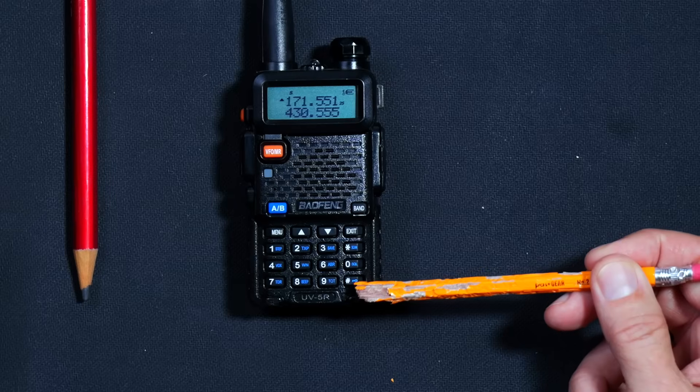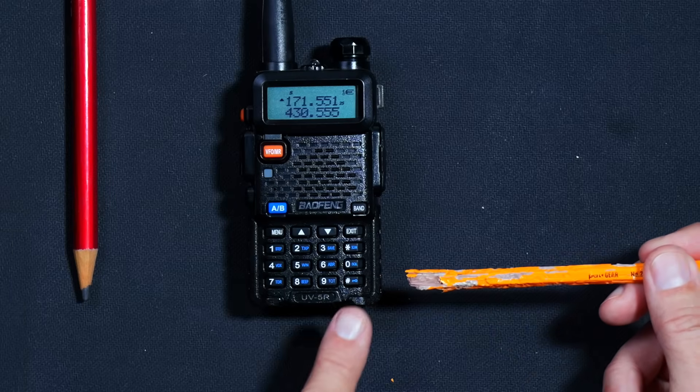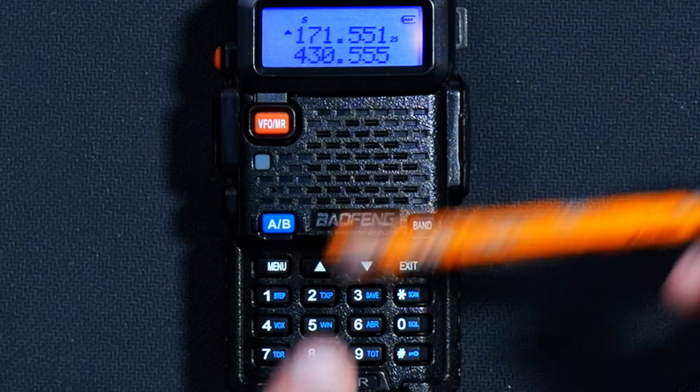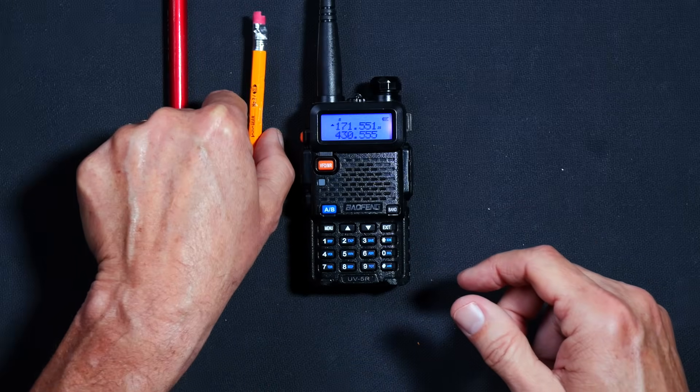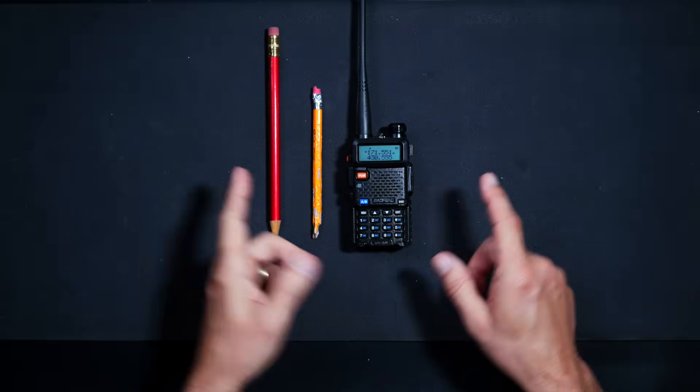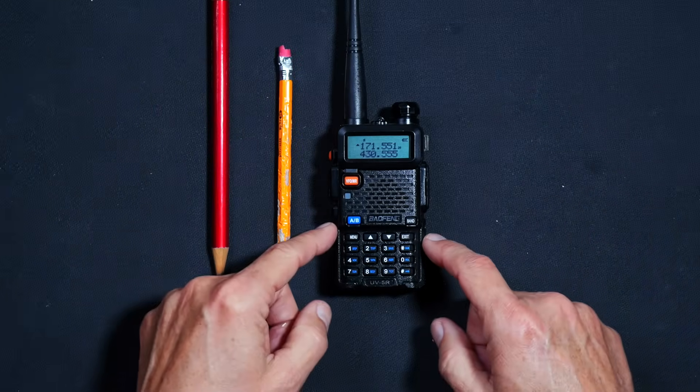To unlock the keypad, simply press and hold the unlock button, which is indicated by the little blue unlock picture on this button. This button is also sometimes referred to as the hashtag button. The radio is now unlocked and ready for you to type something in. You now simply type in the frequency that you wrote down earlier.